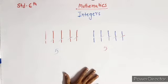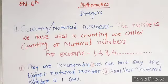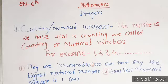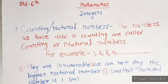Numbers were created to meet the need to count things in nature. We got the definition of counting or natural numbers. The numbers we have used for counting are called counting or natural numbers. For example, 1, 2, 3, 4, dash dash dash. We write dashes because counting or natural numbers are innumerable. We cannot say the biggest natural number, but the smallest natural number is 1.